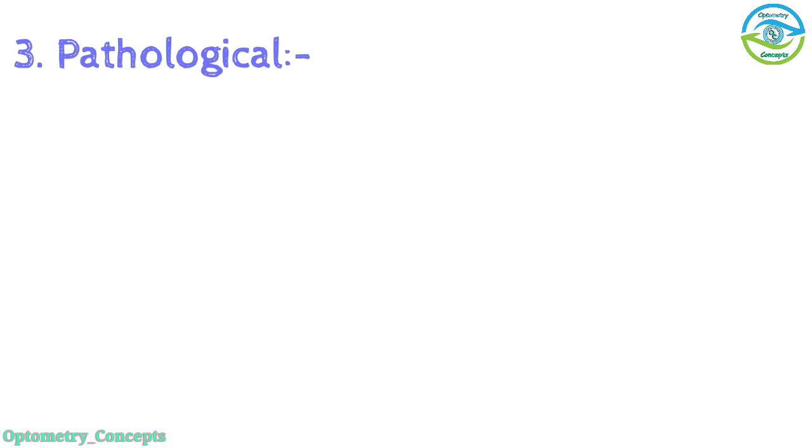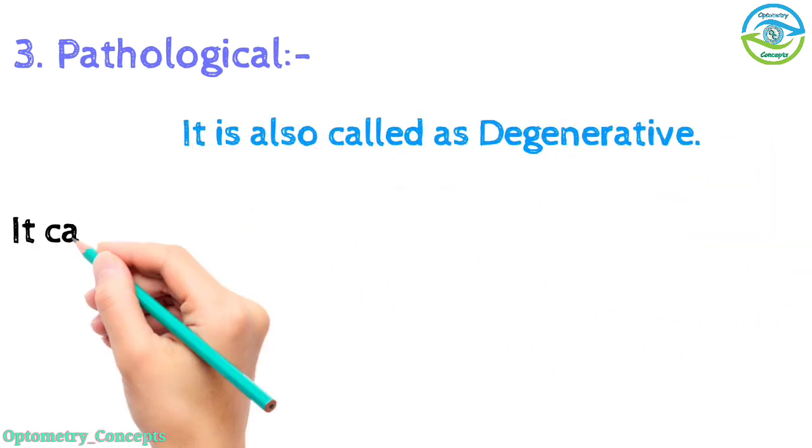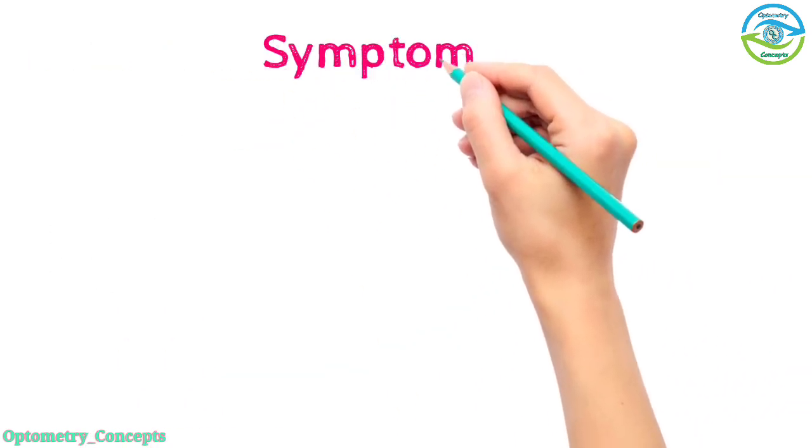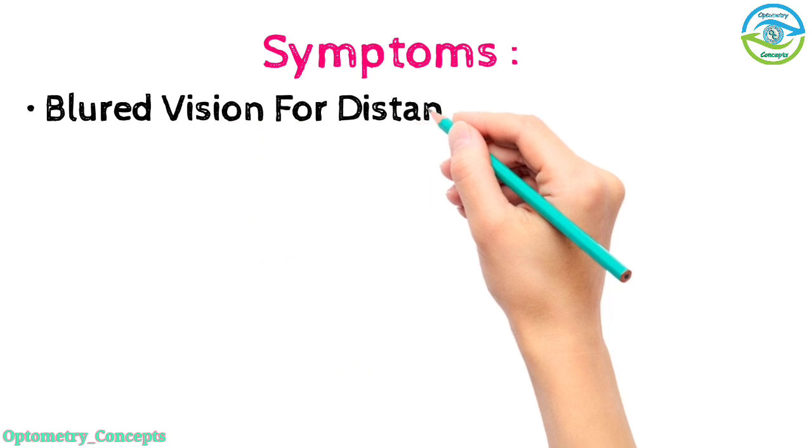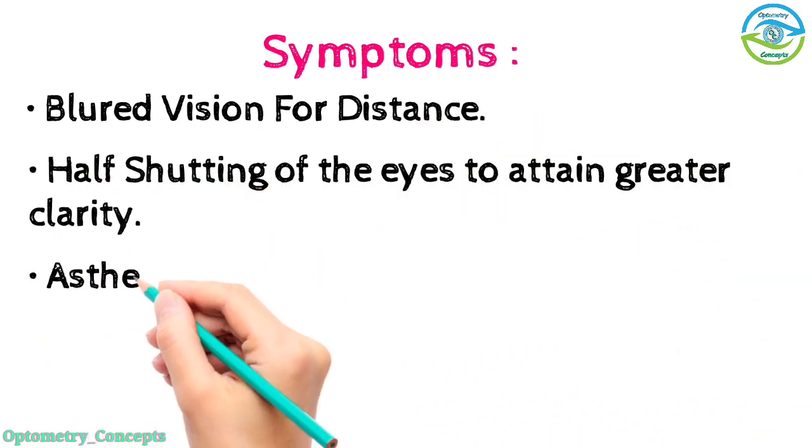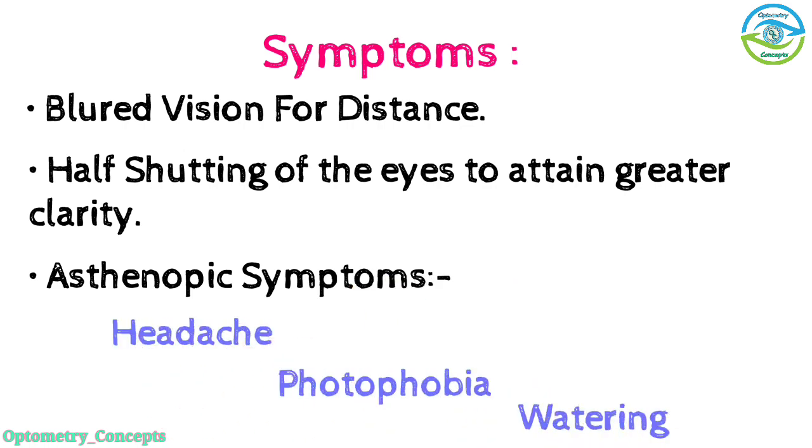Pathological, also called degenerative, causes due to degenerative changes of the eye. Symptoms: blurred vision for distance, half shutting of the eye to attain greater clarity, asthenopic symptoms such as headache, photophobia, watering, etc.